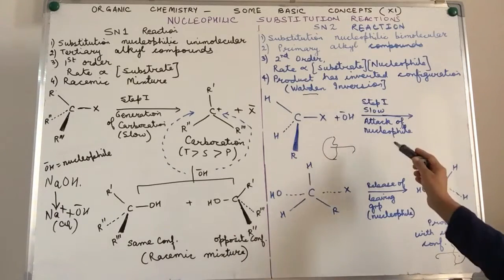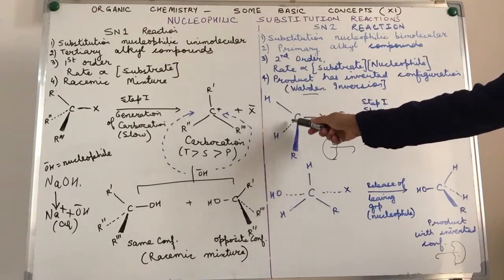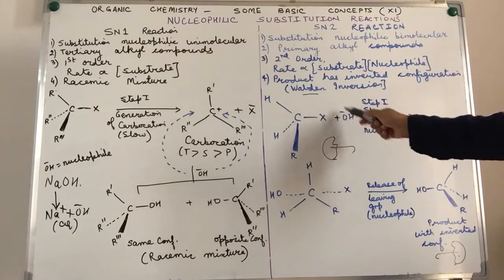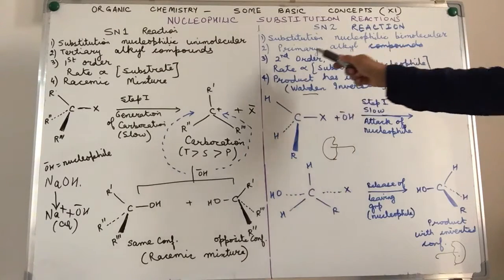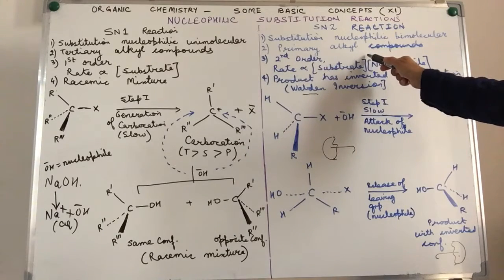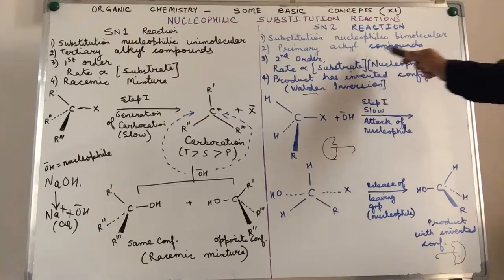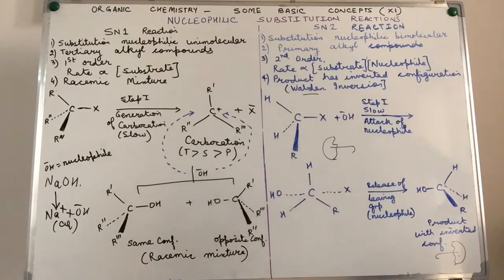The slow step in SN2 is where the incoming nucleophile tries to attach itself to the central carbon atom. This slow step involves two molecules — bimolecular. Experimentally, the rate is dependent on the first power of the concentration of the substrate and the first power of the concentration of the nucleophile — one plus one gives two. Hence this is a second order reaction, compared to SN1 which is a first order reaction.